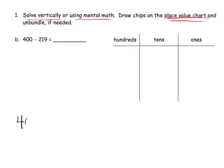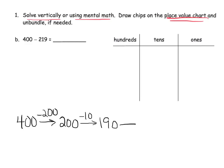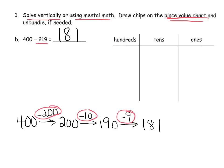I'm going to start with 400 and subtract 200, which gives me 200. Then I subtract 10, giving me 190. Then I subtract 9, giving me 181. So our answer is 181. We subtracted 200, 10, and 9 — that's 219 — using the arrow method, doing it in pieces step at a time.